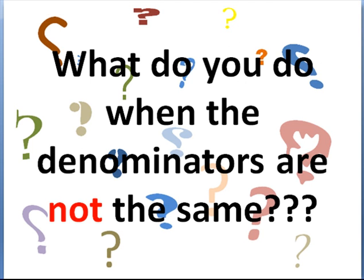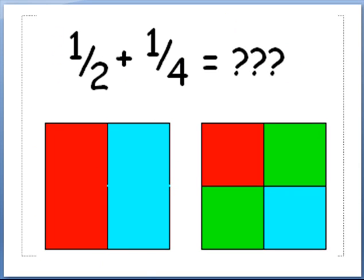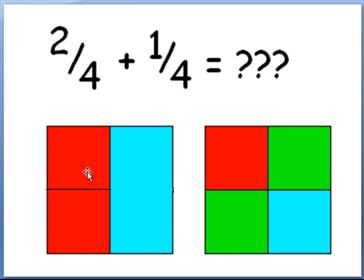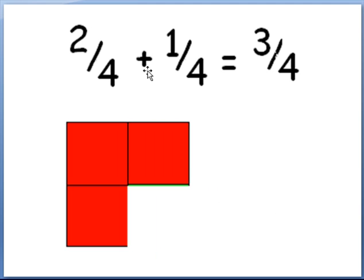What do you do when the denominators are not the same? Here we have 1 half plus 1 quarter — the denominators are not the same. I've drawn a box cut in half: half of it's red, and half is not. Then I have the same size box cut into four pieces. I can cut the 1 half into two pieces, giving me 2 quarters. And 1 quarter plus 1 quarter plus 1 quarter is 3 quarters.